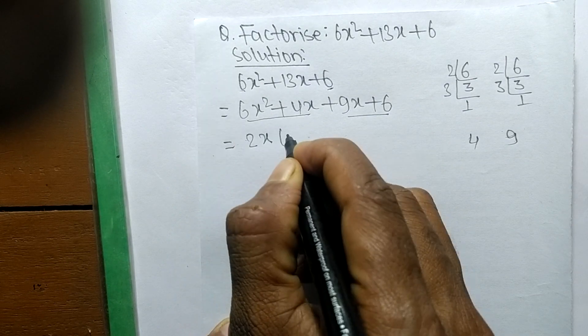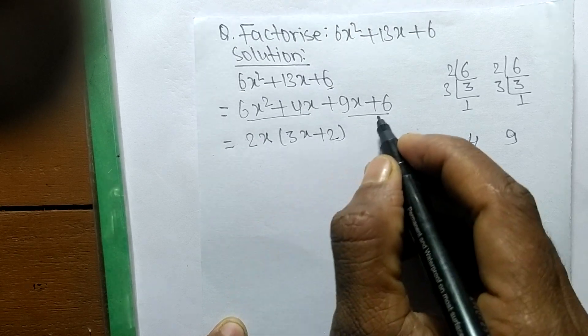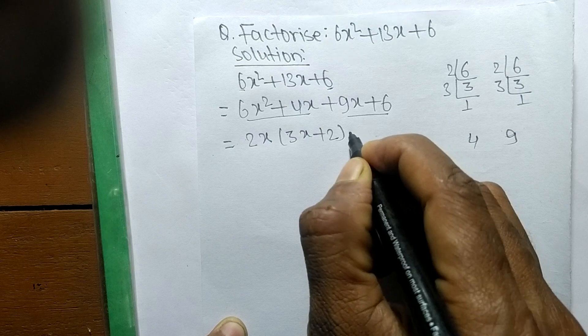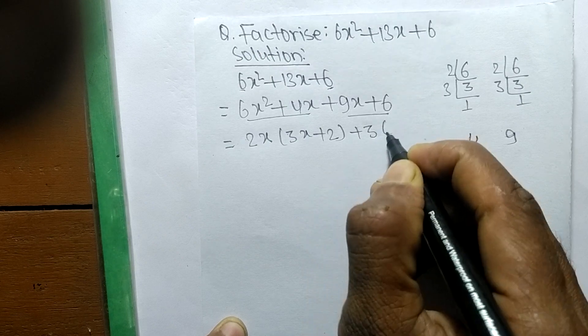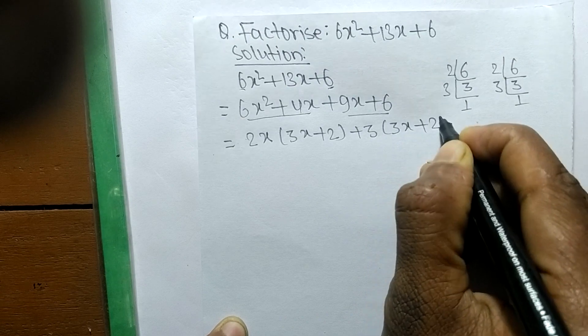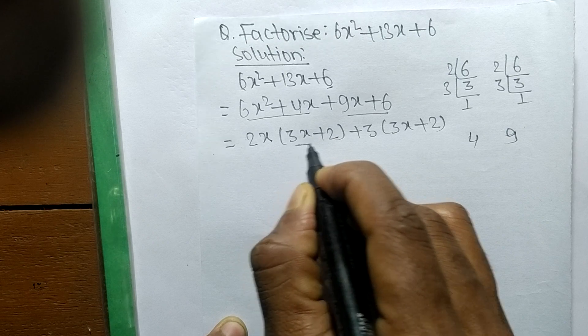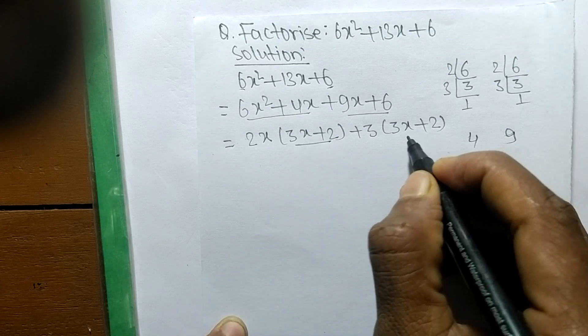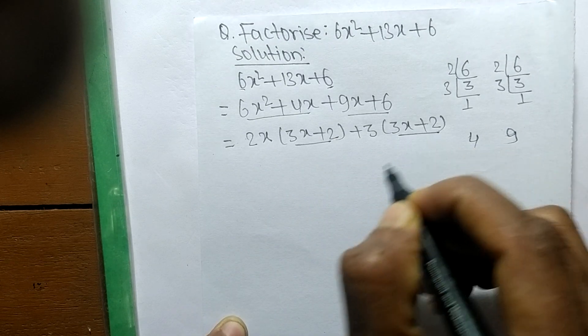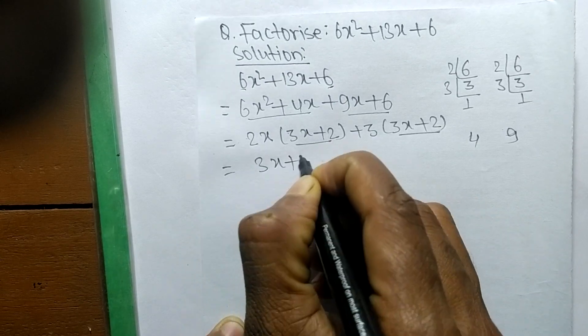So the remaining is 3x + 2. Like as in second pair the common here is plus 3. So the remaining is 3x + 2. As you look closely, in first expression there is 3x + 2, like as in second also there is 3x + 2.